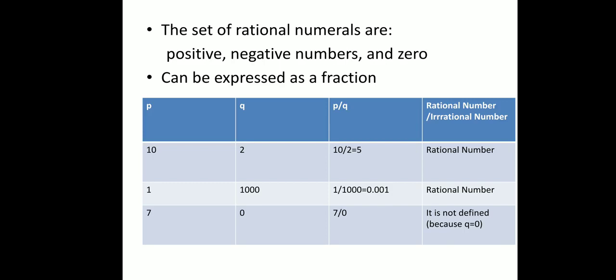Let us take a few examples. Taking P = 10 and Q = 2, the ratio P/Q = 10/2 = 5. We check both conditions: P is an integer, Q is an integer, and Q = 2 is not equal to 0, so both conditions are satisfied — 10/2, which equals 5/1, is a rational number. Next, if P = 1 and Q = 1000, then P/Q = 1/1000 = 0.001, which is a decimal notation. Since it satisfies both conditions, 0.001 is also a rational number.